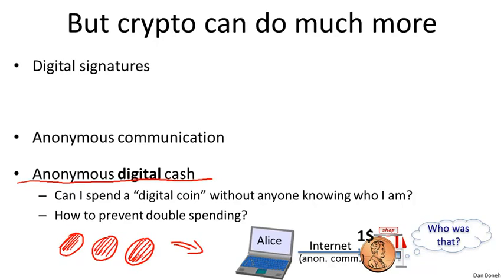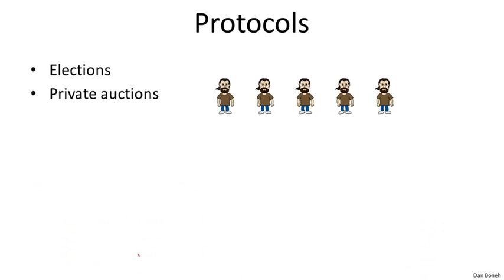In some sense, there's a paradox here where anonymity is in conflict with security. If we have anonymous cash, there's nothing to prevent Alice from double-spending the coin, and because the coin is anonymous, we have no way of telling who committed the fraud. It turns out this tension is completely resolvable — the way we do it is by ensuring that if Alice spends the coin once, no one knows who she is, but if she spends it more than once, her identity is completely exposed and she could face legal consequences.